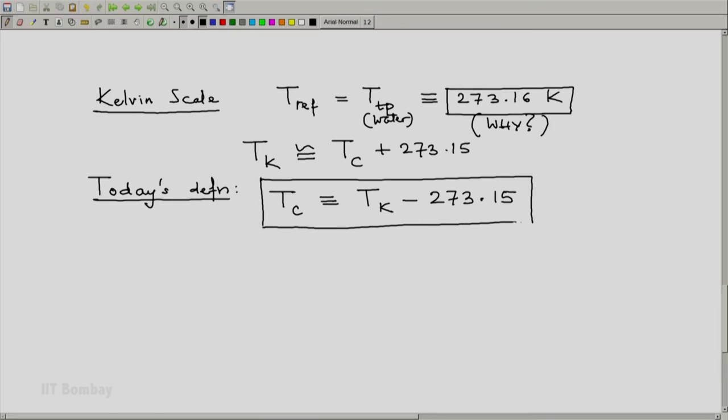So, that today, the Celsius temperature is defined in terms of Kelvin temperature. And the Kelvin temperature is defined using the ideal gas scheme that we saw earlier.